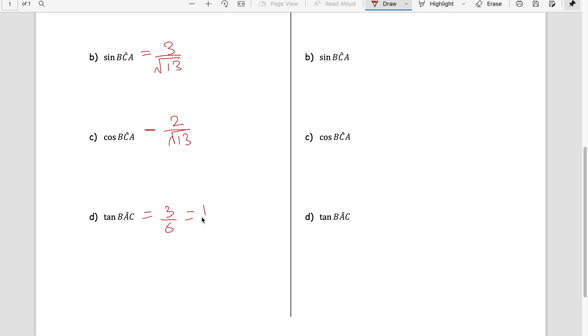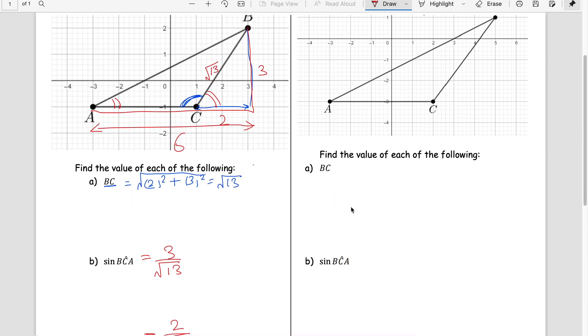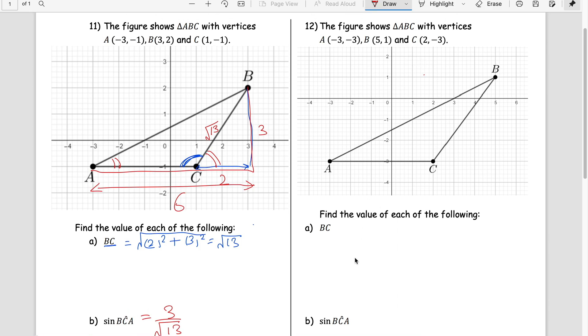Example number two. Again it says find the value of each of the following: BC. BC again the length. So from 2 to 5 the length is 3, and from 1 to minus 3 the length is 4. When you apply Pythagoras theorem, this is 3 square plus 4 square, hole under the root, you get 5 units of length. Now sine BCA. Again BCA is obtuse. We cannot answer that, so we will go for an acute angle, and that is perpendicular over hypotenuse, and sine is positive in both the quadrants, obtuse and acute.